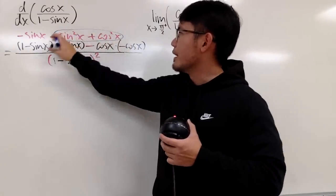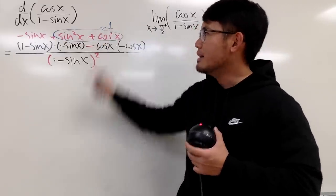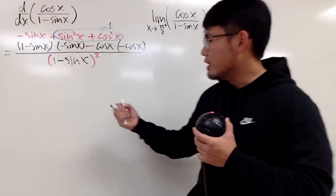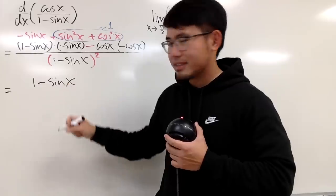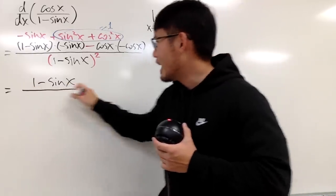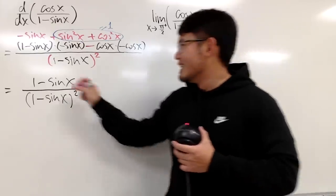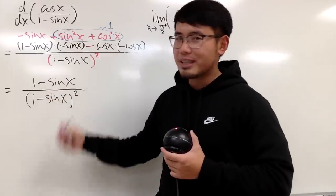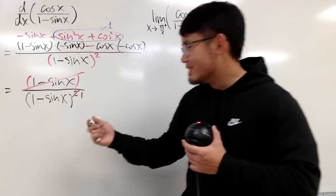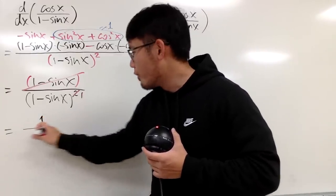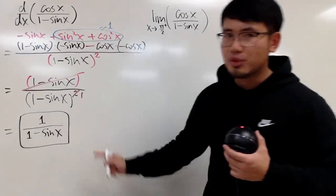All this adds up to a nice 1. So on the top, in fact, we have 1 minus sine x. Let me just write this down once again — it's 1 minus sine x. And then on the bottom, we have 1 minus sine x to the second power. This right here is to the first power, this right here is to the second power. So we can cancel one of these, and we have just this on the bottom. So altogether, we have 1 on the top over 1 minus sine x, and this right here is the derivative.